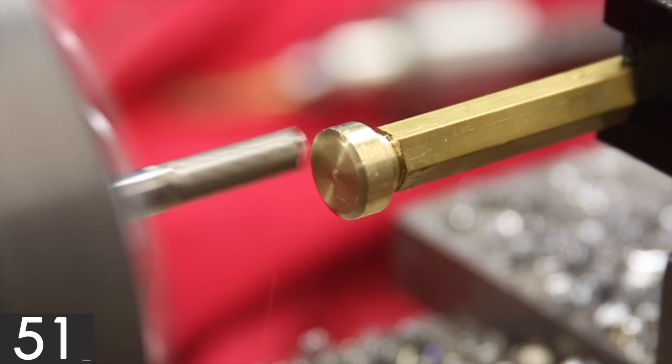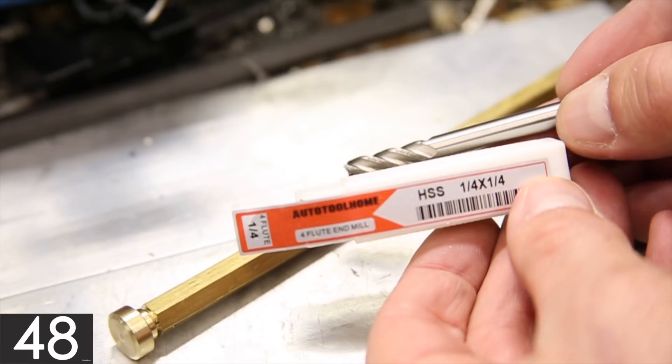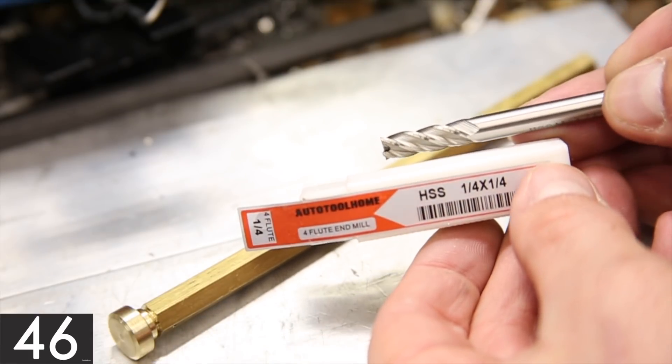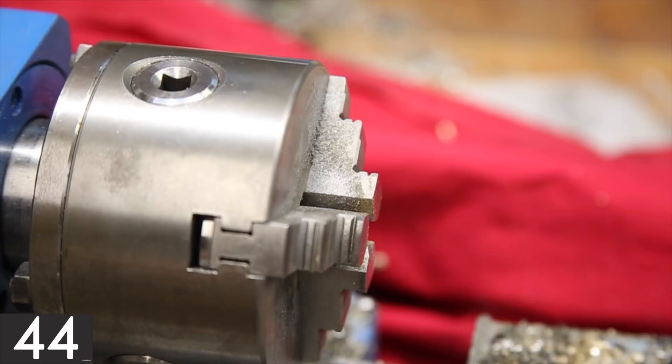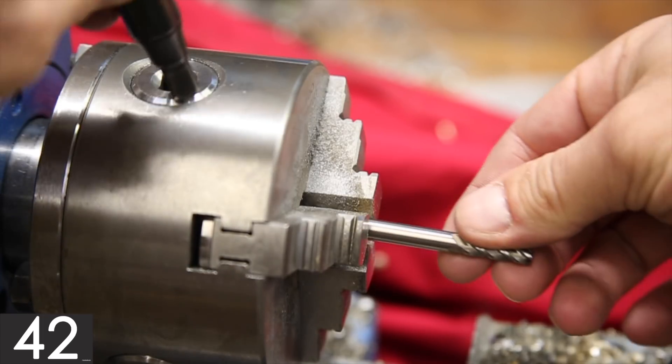I'm going to be using a quarter inch end mill bit in this example video but other milling bits could be used as well. The first and easiest step is to put the tool or bit in the chuck of the lathe.